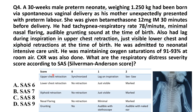The Silverman-Andersen score uses five parameters: upper chest retraction, lower chest retraction, xiphoid retraction, nasal flaring, and grunting. In our patient: upper chest retraction — lag on inspiration; lower chest retraction — just visible; xiphoid retraction — just visible; nasal flaring — minimal; grunting sound — audible with naked ear. So the total score is 6.